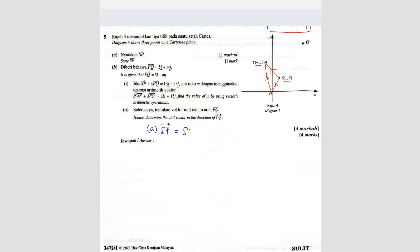So SP is same as S to O plus O to P. So SO is what? Because OS, we know OS is the same as the coordinate, right, so 1, 2. So SO will be the opposite. So negative 1, negative 2 plus OP. So OP is negative 1 and 5. So your answer should be negative 2 and 3.